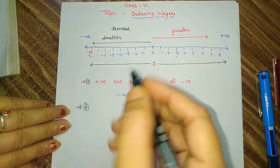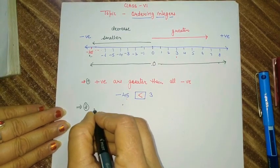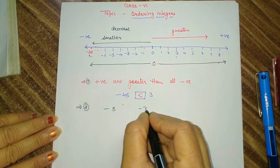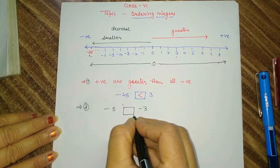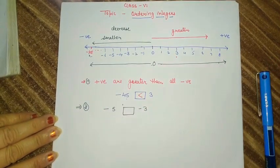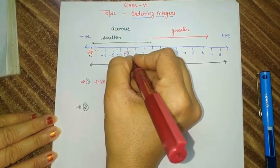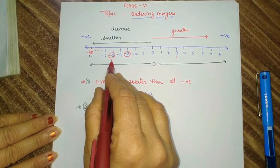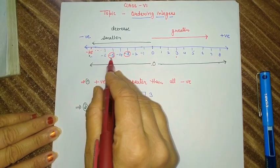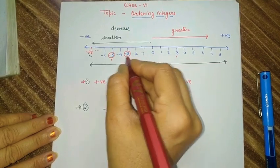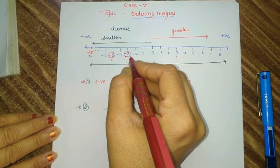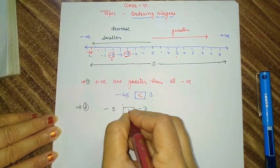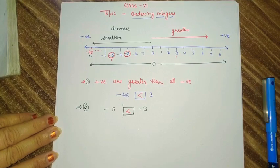Now with one more example: if I have to compare minus 5 and minus 3, which is bigger? Observe these numbers on the number line. Minus 3 is here and minus 5 is here. Which number is far from 0? That is minus 5 — that means minus 5's value is decreased. Which number is near to 0? That is minus 3. So that means minus 3's value is more than minus 5, so minus 3 is greater than minus 5.